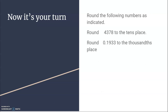Now it's your turn. Round the following numbers as indicated. Round 4378 to the tens place, and round 0.1933 to the thousandths place. Go ahead and pause the video and see if you get it right.